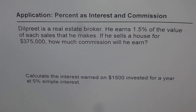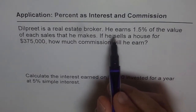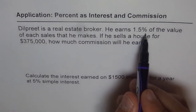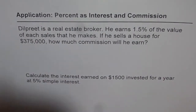Dilpreet is a real estate broker. He earns 1.5% of the value of each sale that he makes. If he sells a house for $375,000, how much commission will he earn? Simple, straightforward question to start with. So we say he earns 1.5% of the value — 1.5% of this value.